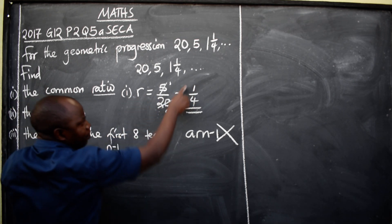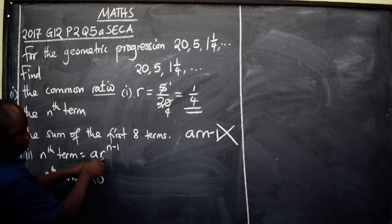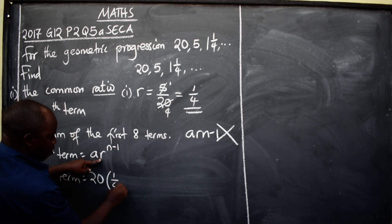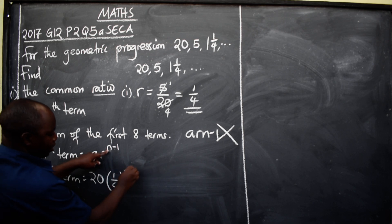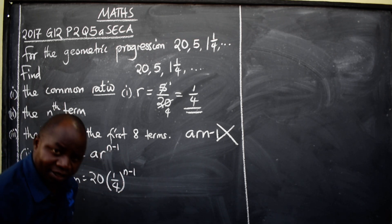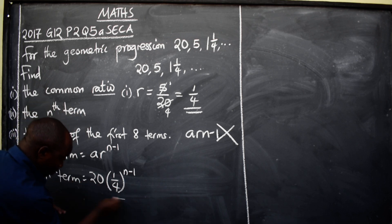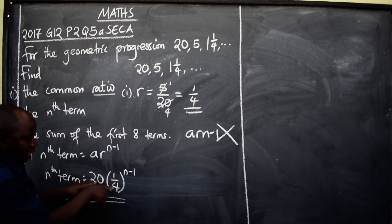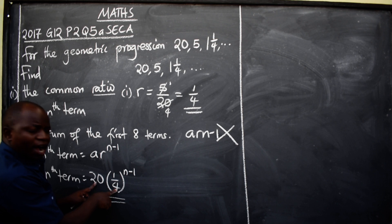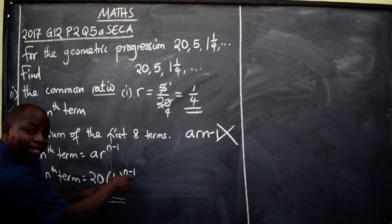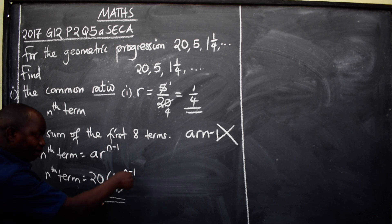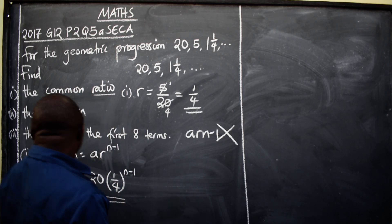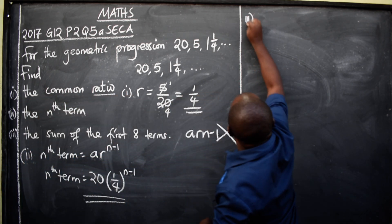R is the common ratio, which is 1/4. Since it has a power, put it in brackets: 20 times (1/4) to the power n minus one. At this point, please leave it the way it is — do not multiply or reduce 20 and 4, because the 1/4 has a power on this side, so you cannot multiply before dealing with the power. That is the answer for the nth term.